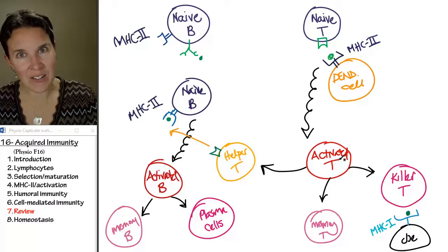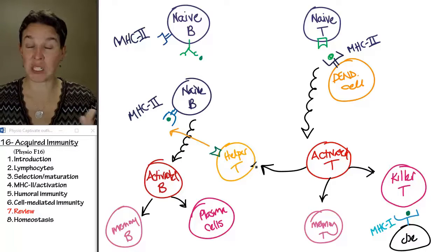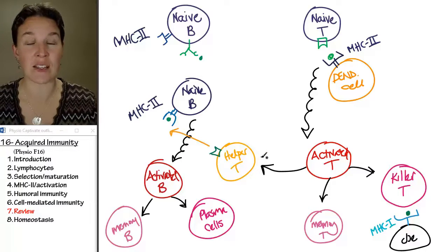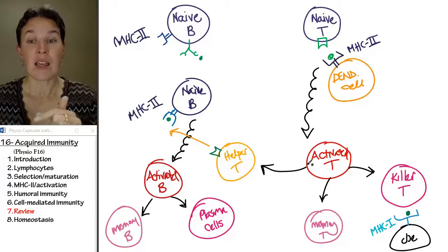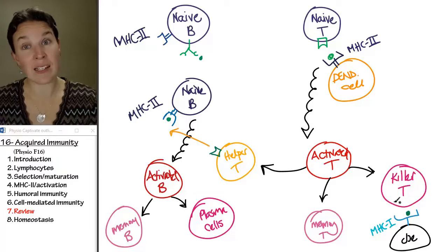The activated T cell can differentiate depending on the nature of the cell. It will either become a helper T cell, a memory T cell, or a killer T cell.